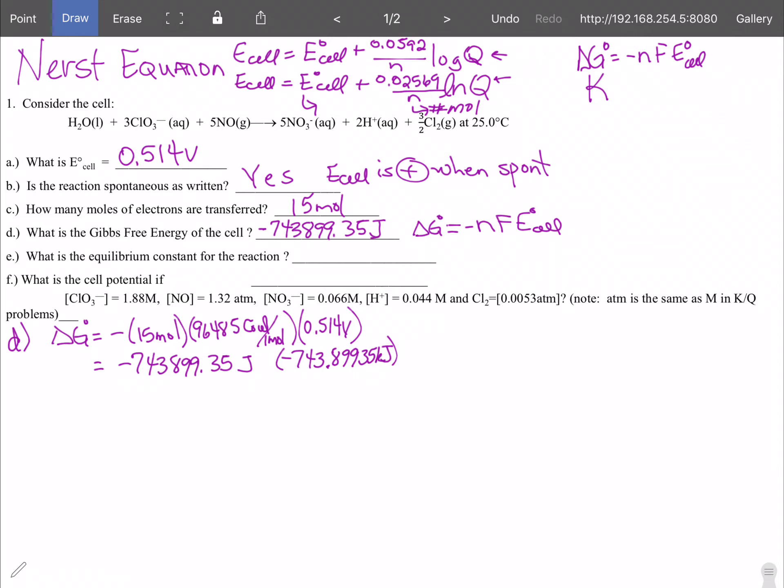The next one is what is the equilibrium constant for the reaction. If we look at our equation sheet we could do this with a Nernst equation and adapt it back because remember at equilibrium E cell is zero and Q is K but we've already done that and adapted that so we either get K is equal to e to the positive E cell times n divided by 0.02569.